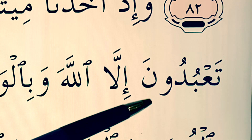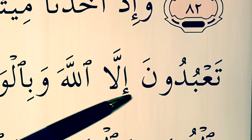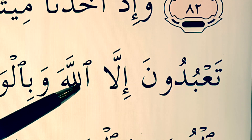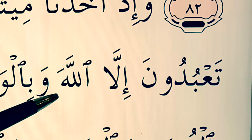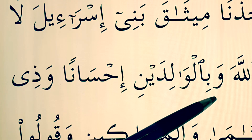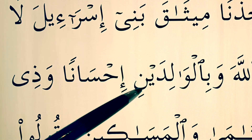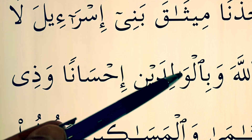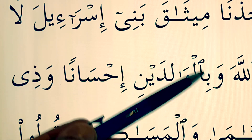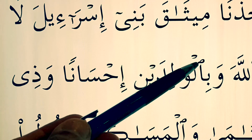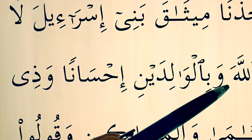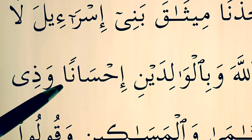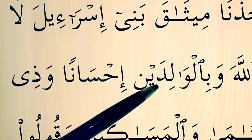تَعْبُدُونَ إِلَّا اللَّهَ — you drop the hamzat al-wasl there going into the lam here: إِلَّا اللَّهَ. Then وَبِالْوَالِدَيْنِ — there's a long alif after the waw, so the hamzat al-wasl drops and goes straight into the lam: وَبِالْوَالِدَيْنِ. This happens over and over in so many exercises: وَبِالْوَالِدَيْنِ إِحْسَانًا.